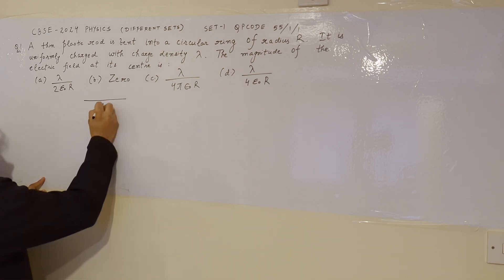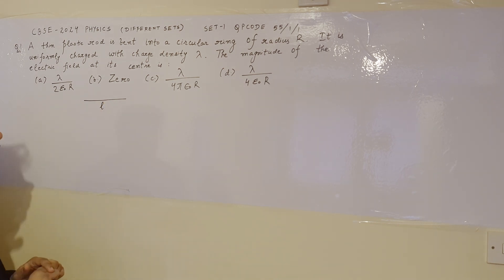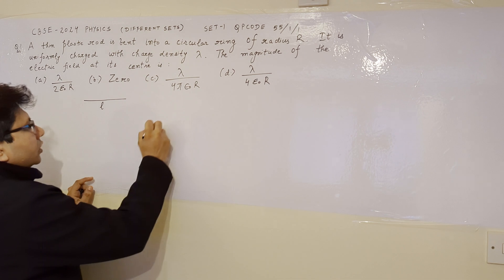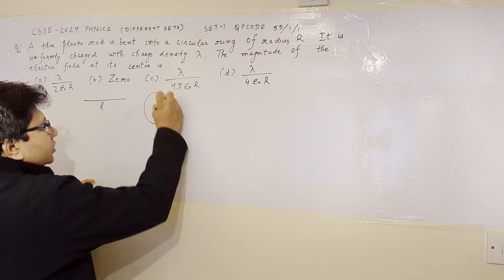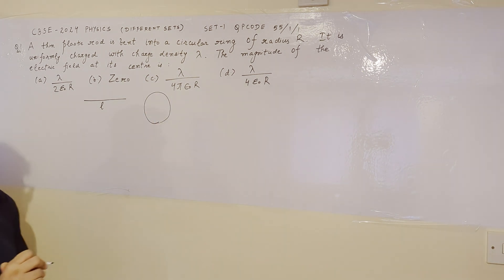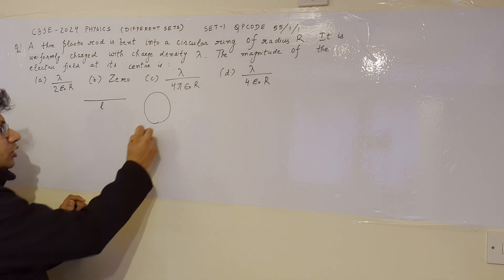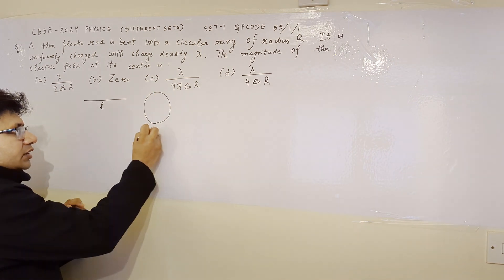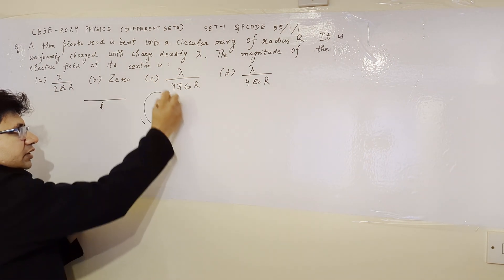Suppose its length is l. Now this particular rod is bent in the form of a circle. So this particular circumference is l.